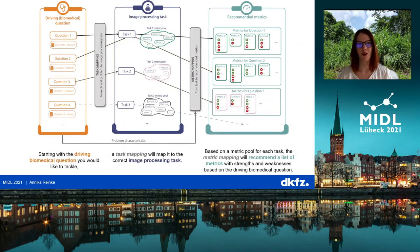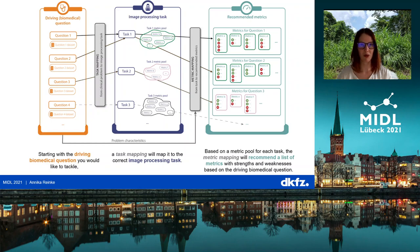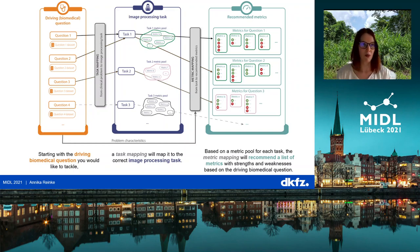Here you see an overview of the process. We start with a driving biomedical question — the problem you want to tackle — and a task mapping leads you to the correct image processing task. Each task has a designated metric pool. Based on this and problem characteristics from the driving biomedical question, the metric mapping will recommend a list of metrics with a strengths and weaknesses profile.